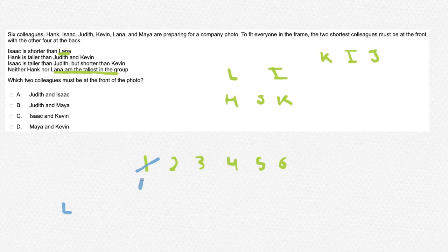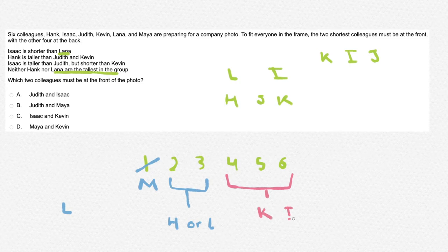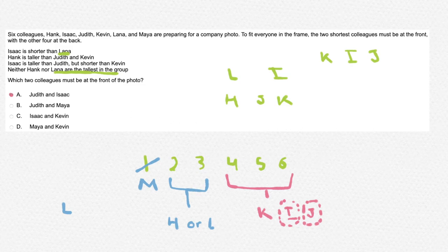Since neither Hank nor Lana are the tallest, and we only have information on five people, Mayer must be the tallest at position 1. Positions 2 and 3 must be occupied by Hank or Lana since they are taller than the others. Positions 4, 5, and 6 must contain Kevin, Isaac, and Judith. Isaac and Judith must be either 5th or 6th position. Therefore, Judith and Isaac are the shortest people in the group, and answer A is correct.